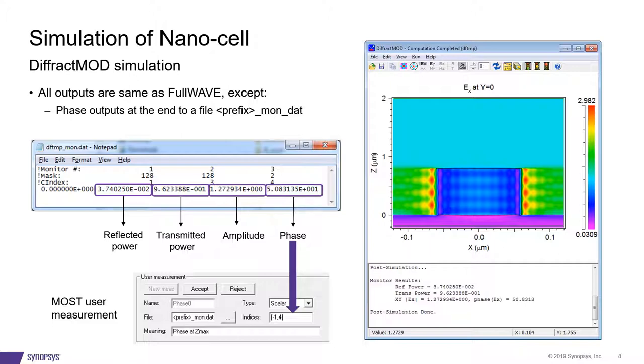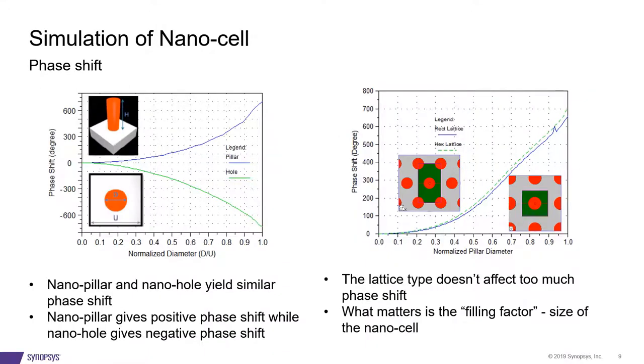Once you have the results, you can run an optimization procedure using MOST to read the phase from the file.